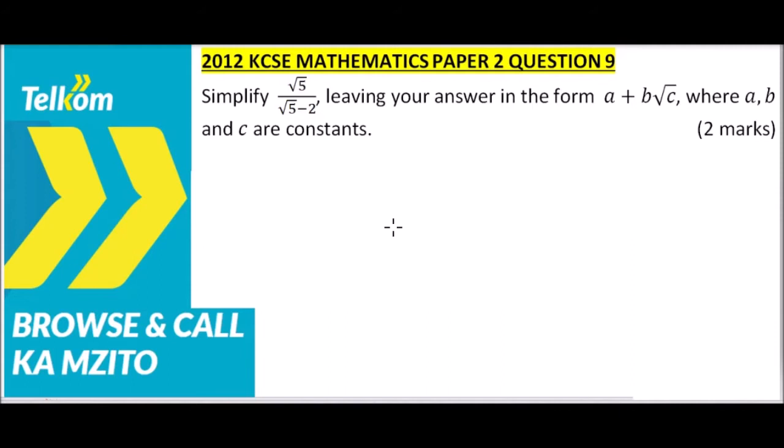To simplify this, we need to remove the surd from the denominator. To do that, we multiply by the conjugate of the denominator, which is √5 plus 2. We just change the sign—because here we have negative, we change it to positive.